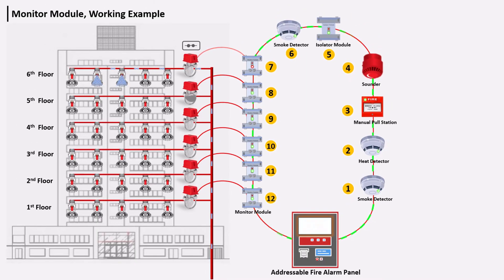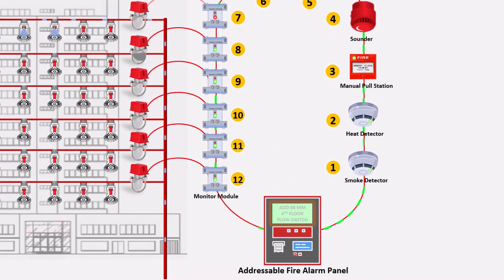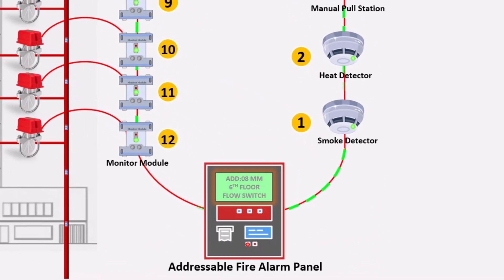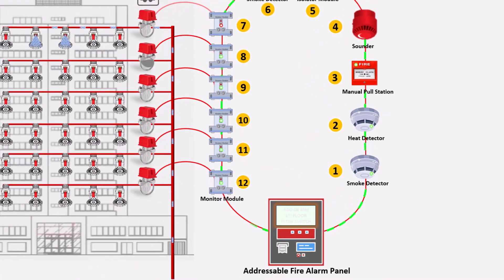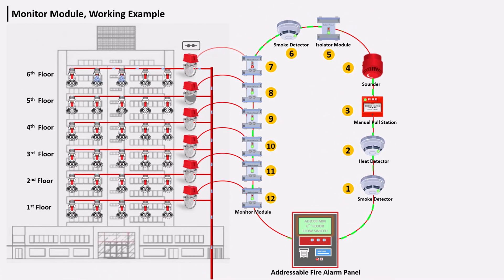When the sixth floor's flow switch is activated, the panel shows address six — monitor module named 'Sixth Floor Water Flow Switch' — indicating the pin location of the flow switch. That is how the monitor module works with an example.